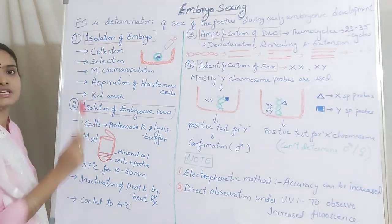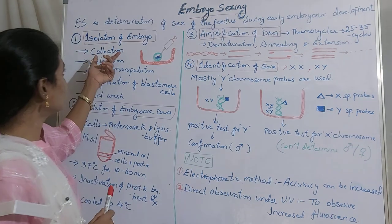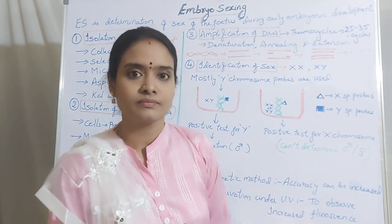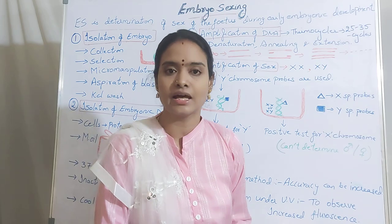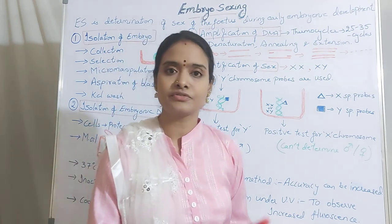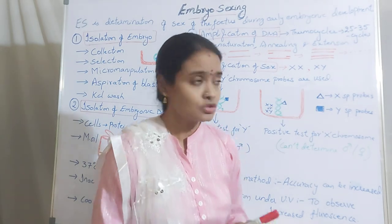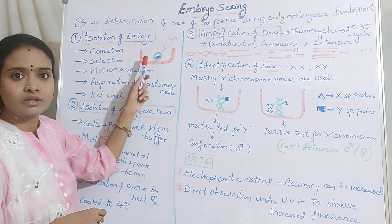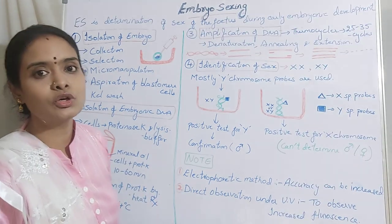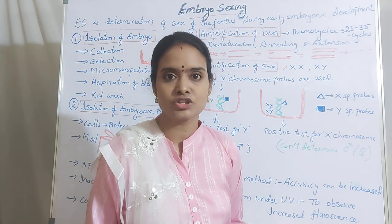In the first step, isolation of the embryo, you are simply going to collect the embryos. If it is in vitro fertilization, the fertilization has occurred in the petri plate in the lab. So you are going to take those embryos and determine whether it is a female progeny or going to develop into a male progeny — we require only the female. You are going to select the embryos based on grading, whether it is grade 1 or grade 2, based on their health condition or development condition.